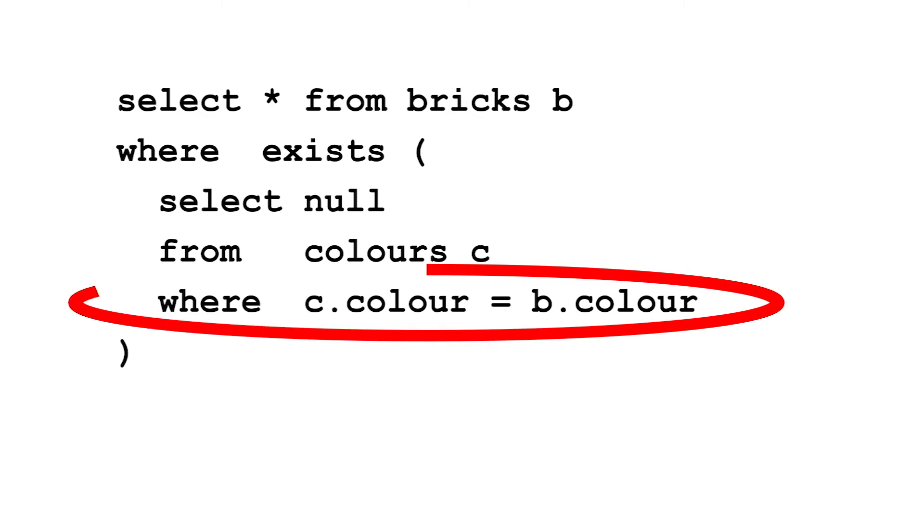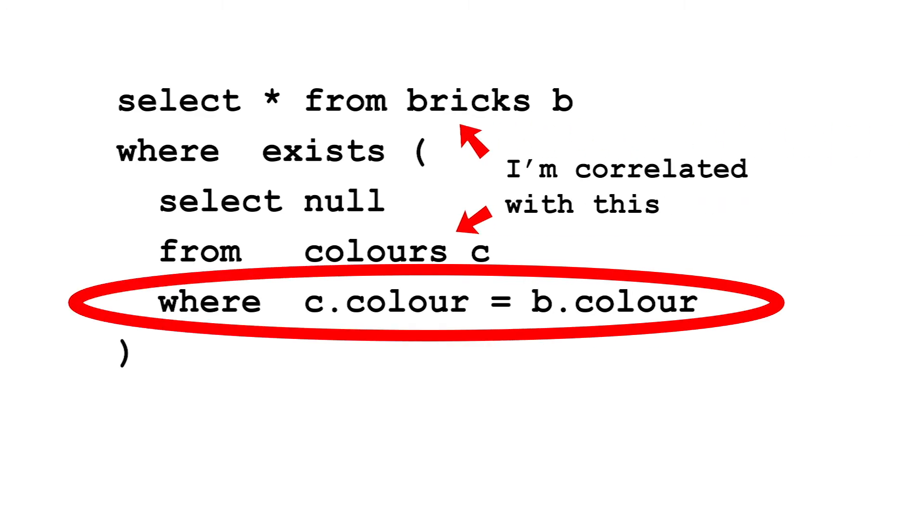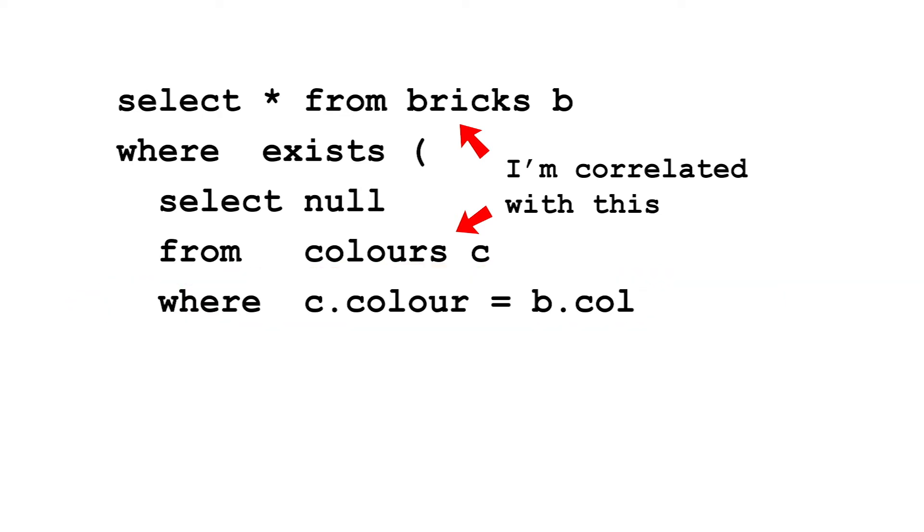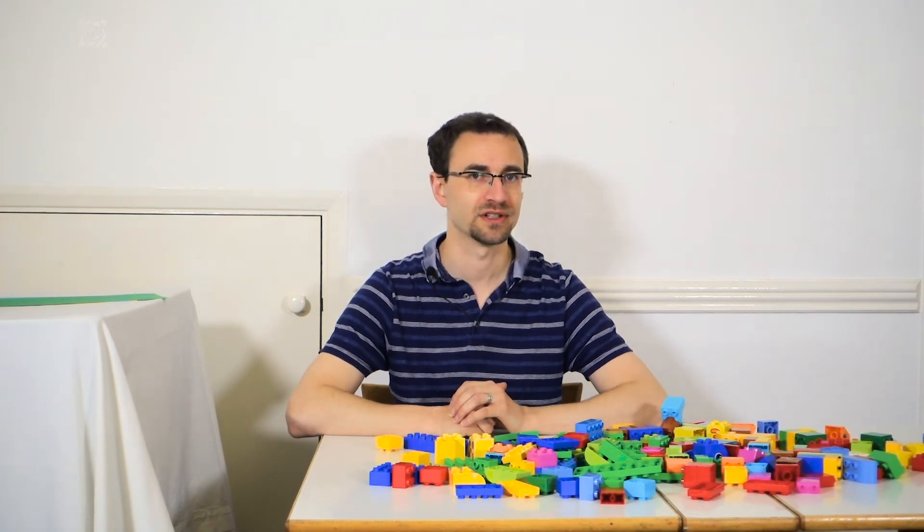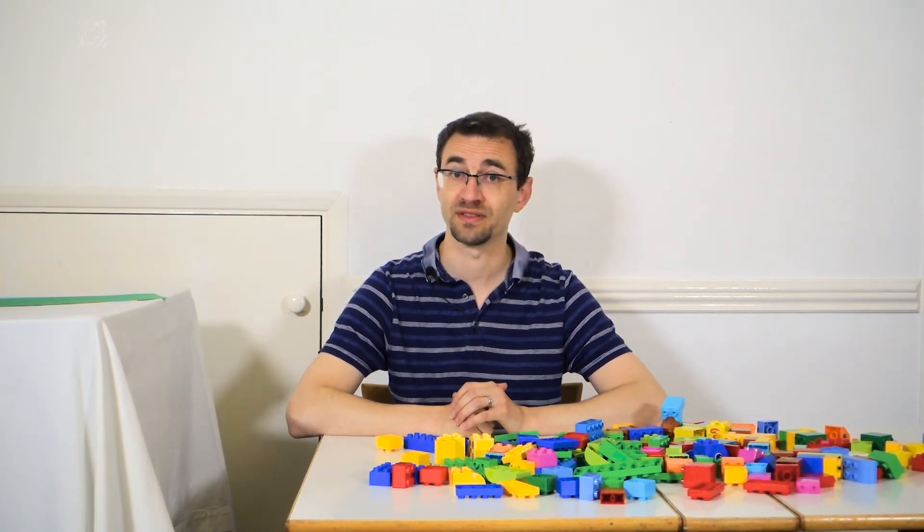When your subquery joins to a table from the parent query like this, it's known as a correlated subquery. If it doesn't, it's uncorrelated. This join is easy to overlook, so check your subqueries carefully to avoid fetching unwanted data.